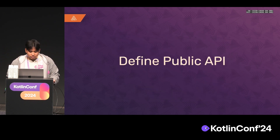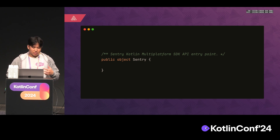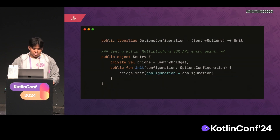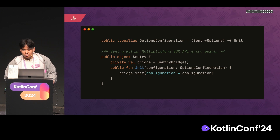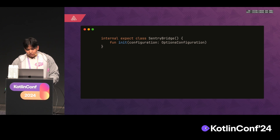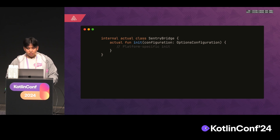For the public API, at Sentry we already have defined guidelines for how we design all of our SDKs, so there wasn't much thinking needed there. As a simple example, we just have an init function which calls SentryBridge — literally the bridge to our platform-specific implementations. It's an expect class, and we want to use our platform-specific SDKs when implementing the initialization function.